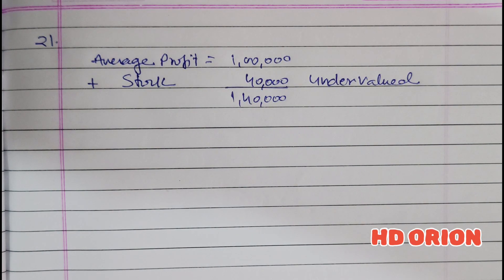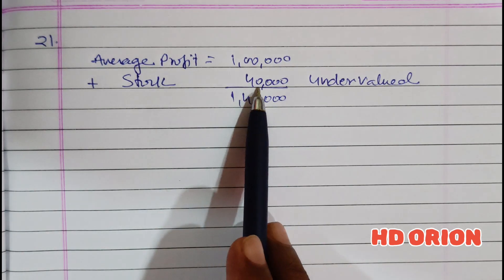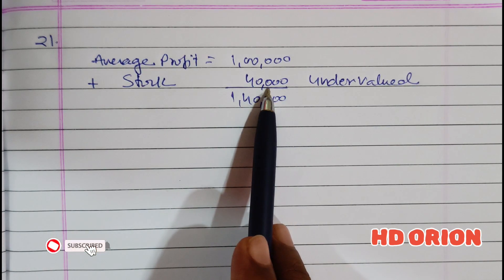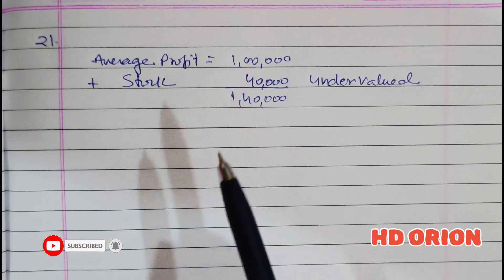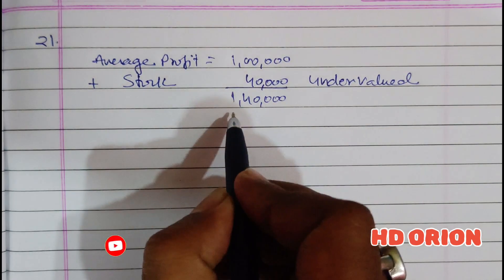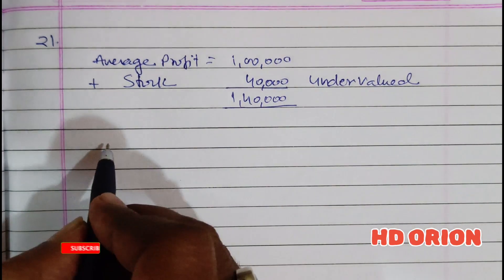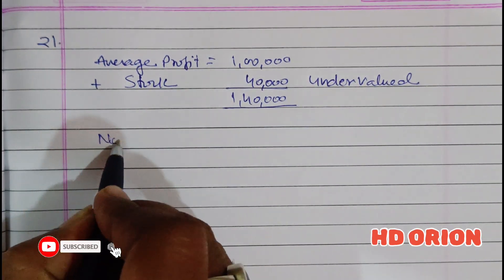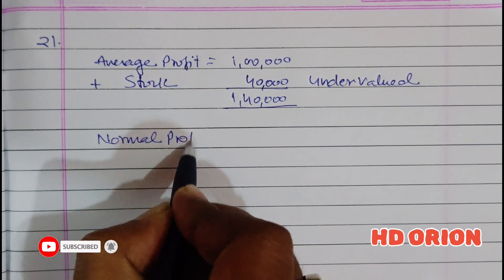It is not the opening stock but the closing stock, because valuation of stock is done on the last day of the financial year. Therefore closing stock has been undervalued, which means the profit is reduced by ₹40,000. After correction, the average profit will be ₹1,40,000. Now let us calculate normal profit.